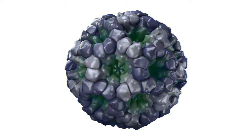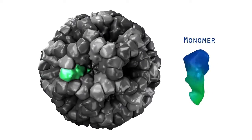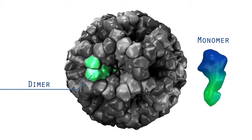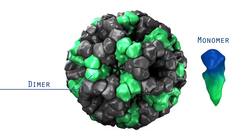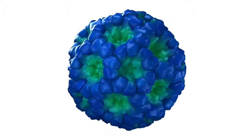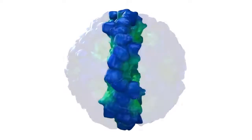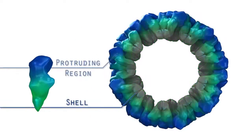The capsid is composed of 180 molecules of a single protein. Each molecule is called a monomer. The monomers self-assemble into dimers, and these 90 dimers in turn assemble into the virus capsid. The capsid is made of two basic structural components, a shell and a protruding region linked by a flexible hinge.